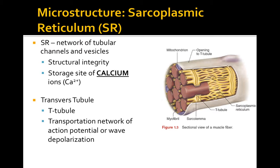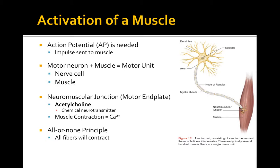So how does this all work? In order for muscle contraction to occur, an impulse needs to be sent down from a motor neuron. A motor neuron and a muscle make up a motor unit. Where they attach is called the neuromuscular junction. The motor end plates on the nerve bind and adhere to the muscle to allow for the current and the communication to occur.